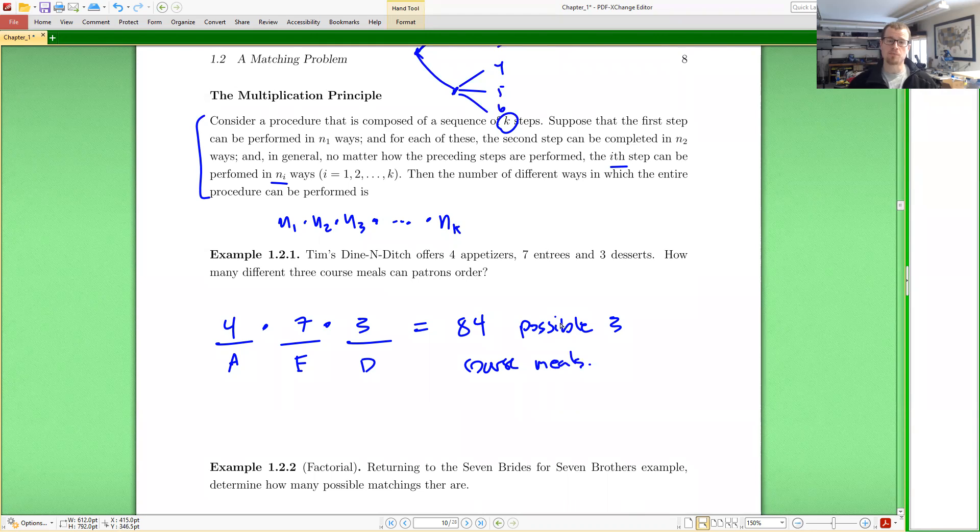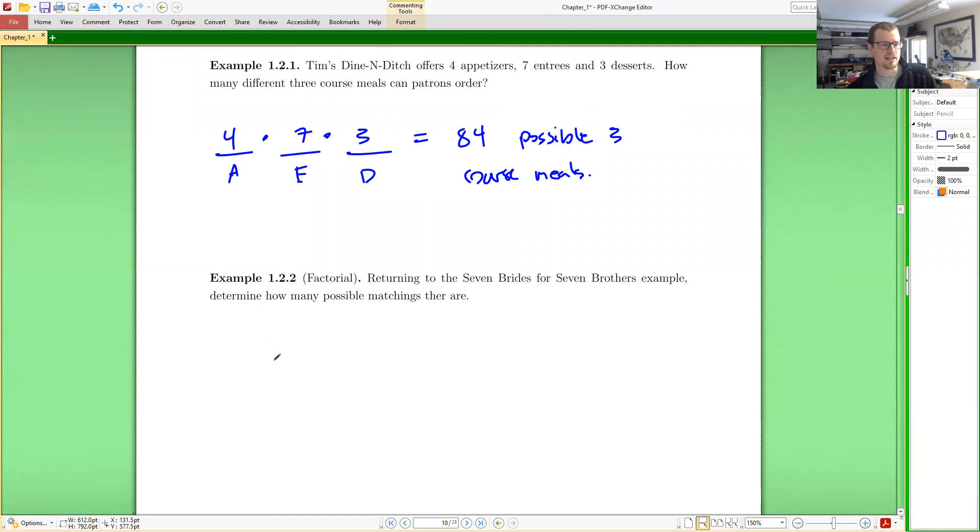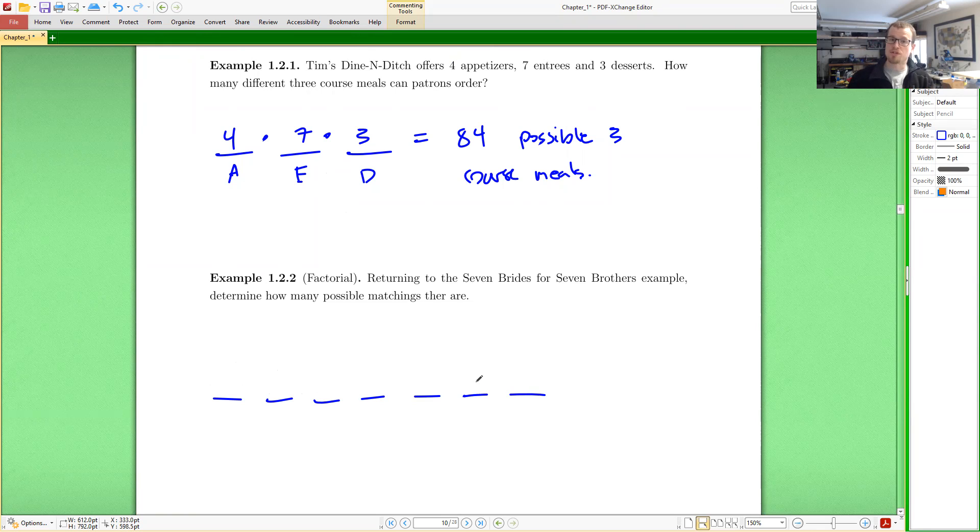So with this simple idea, I can already return back to seven brides for seven brothers and determine how many possible matchings there are. So again, that's arranging the brothers names. This is a little bit more strange. I can't describe it as appetizer, entree, dessert. But I have seven, one, two, three, four, five, six, seven different choices to be made because I'm going to write someone's name down. And then I'm going to write someone else's name down and then someone else's name.